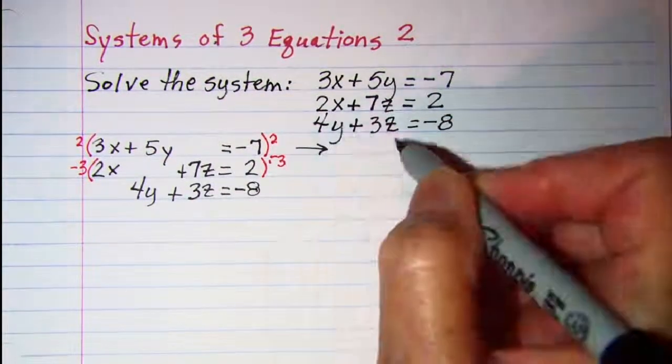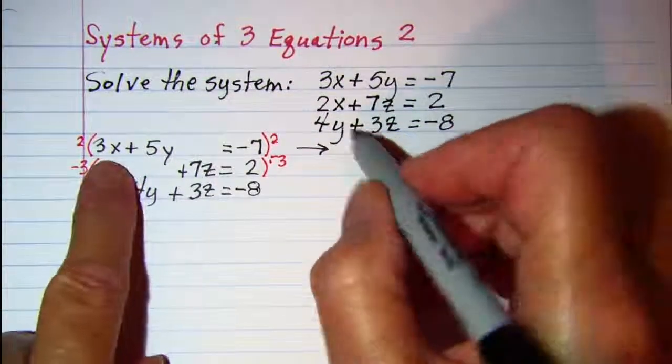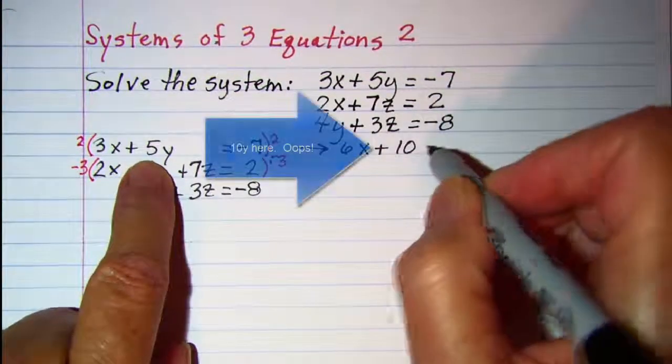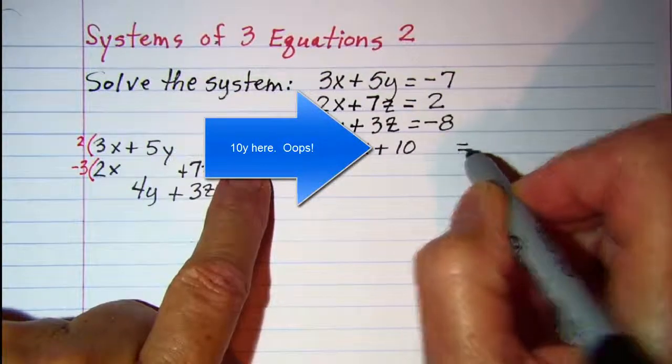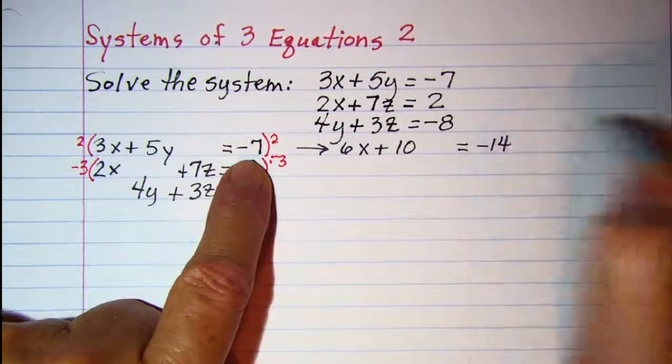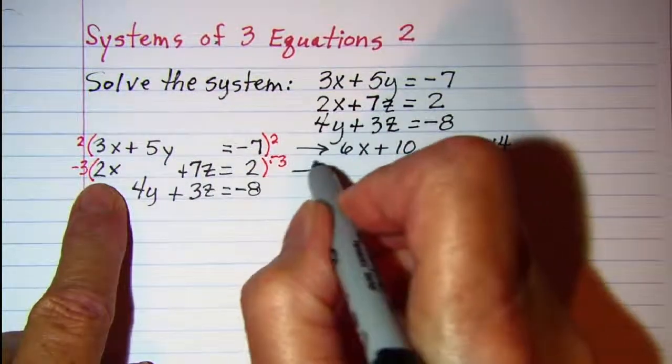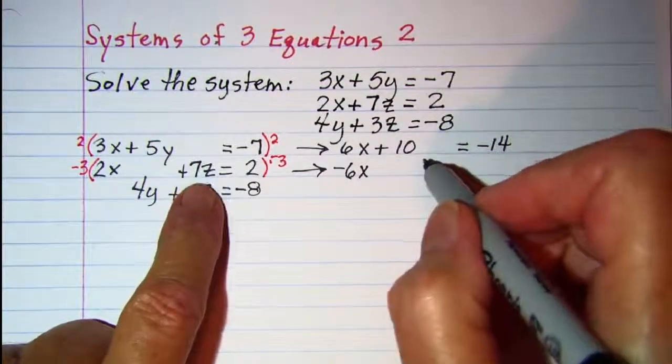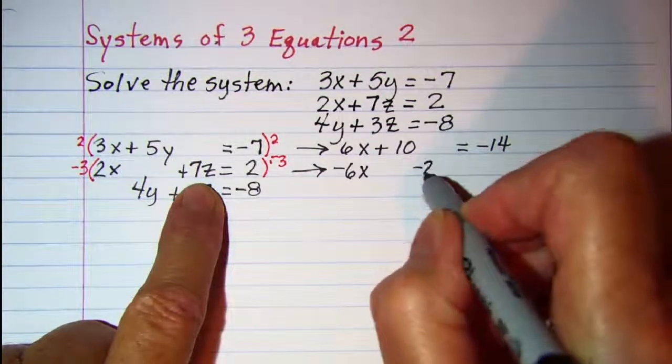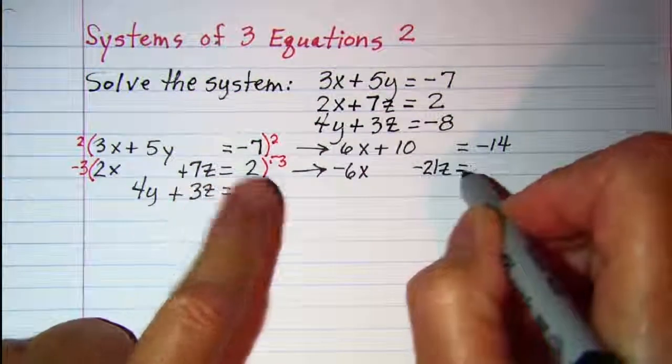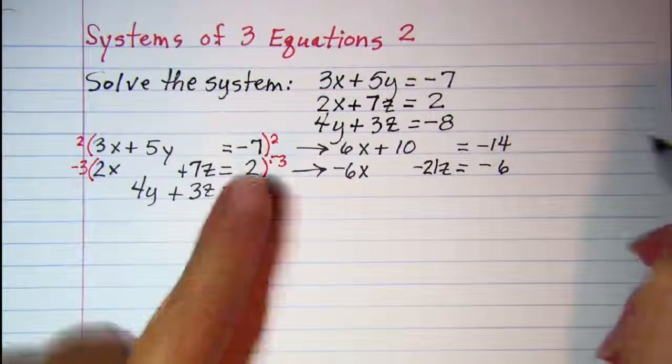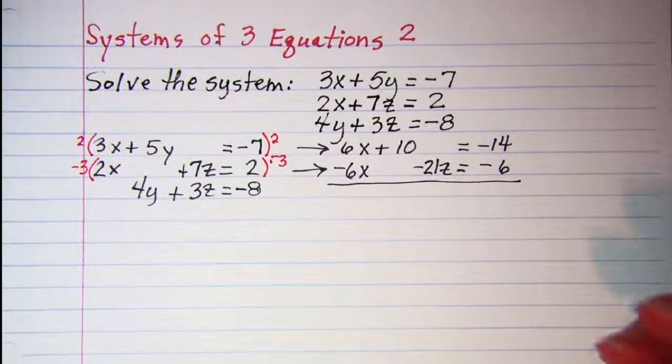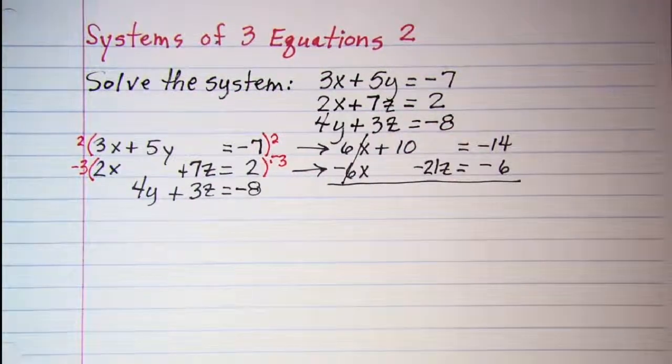This equation then becomes 6x + 10y = -14, and this equation becomes -6x - 21z = -6. Now when I add these together, the x terms will cancel.